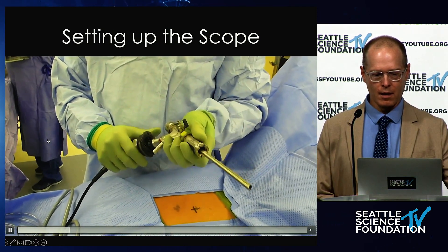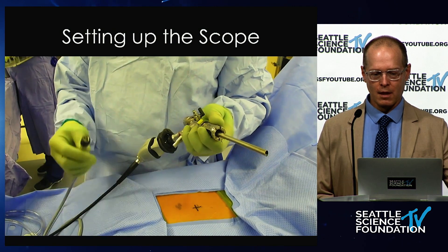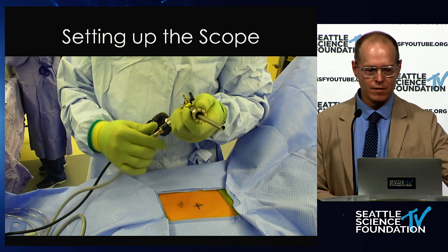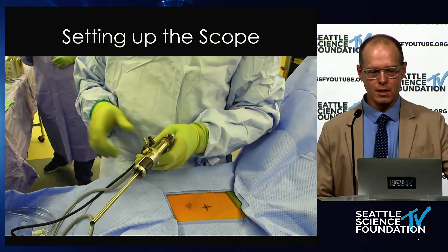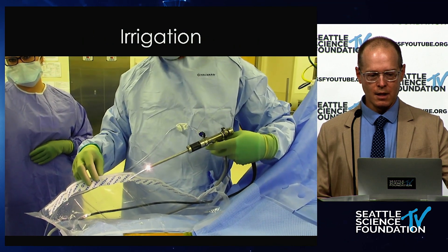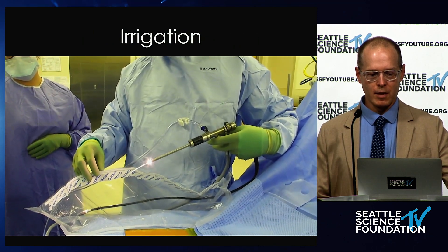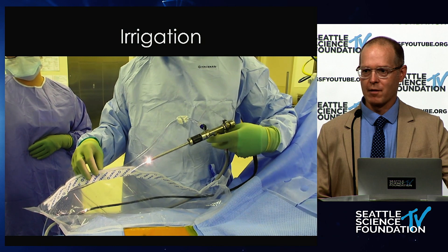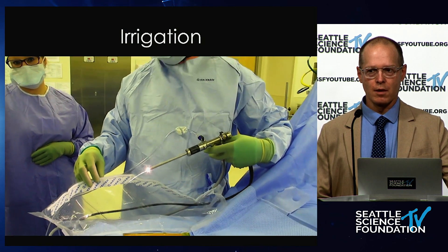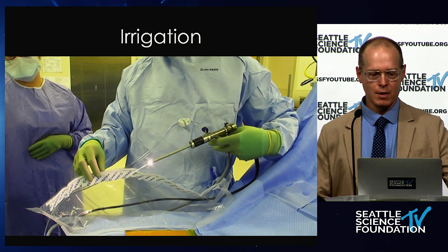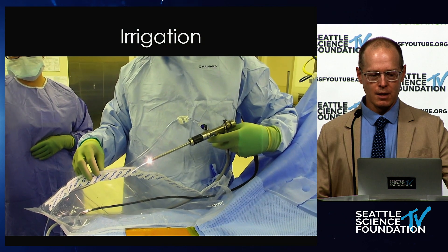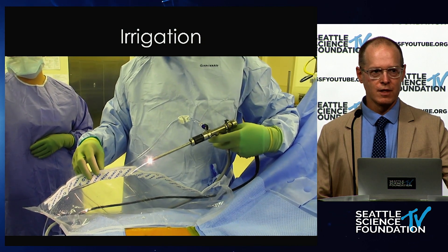For those of you who use arthroscopes or endoscopes, the scope setup is very common: light source, camera, and then irrigation. Irrigation is constant flow irrigation. I typically use anywhere from 35 to 45 millimeters of mercury as my settings, although some newer pumps will have a constant flow setting as opposed to a constant pressure setting. Irrigation is your third hand — your invisible hand.